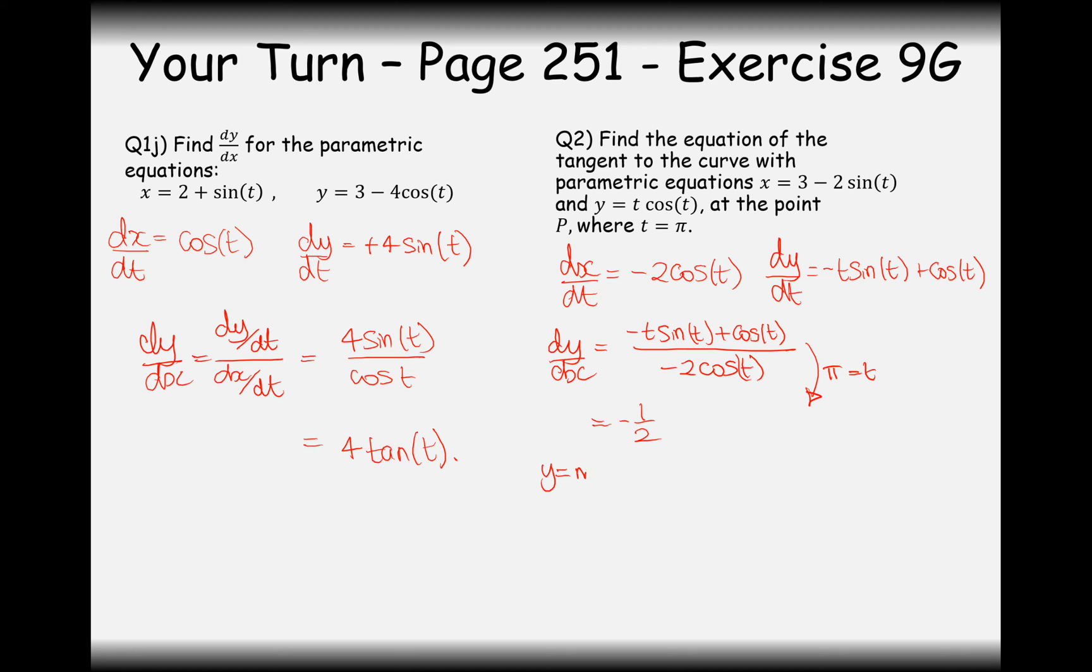So once we've got the gradient, we can now plug things into y equals mx plus c. But hold on, we don't know the x and the y coordinate yet. So we're going to have to plug in pi into the x and the y equation here. So sine of pi is zero, so that x one is just going to be three. And the y one here, pi times cos of pi. Cos of pi is minus 1, so this answer here is going to be minus pi. So now we can substitute in these values. Minus pi equals minus a half times 3 plus c. So in this case here, c is going to equal minus pi plus 3 over 2 equals c.